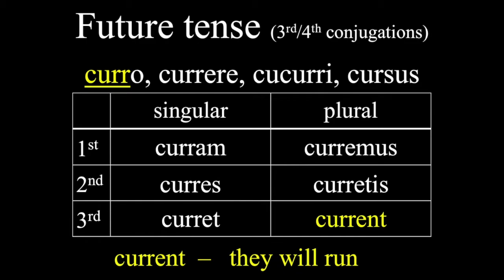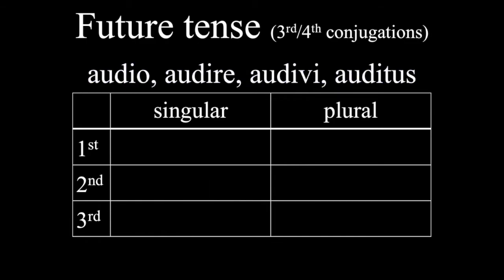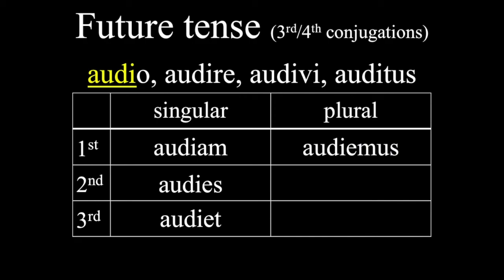All right, let's do one more. Audio audiere is a fourth conjugation verb. We'll do the exact same thing. We'll drop the O from the first principal part, and that gets us our stem. We'll add the endings to that. So we'll get audiam, audies, audiet, audiemus, audietis, and audient.